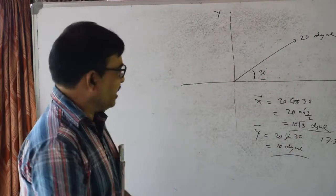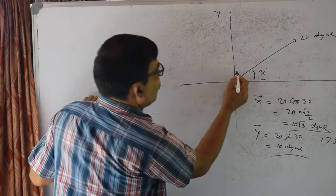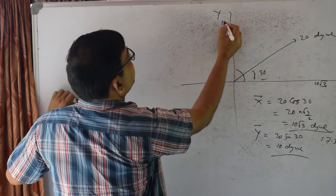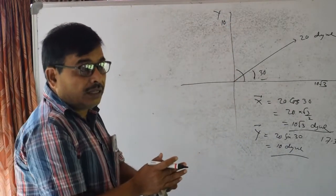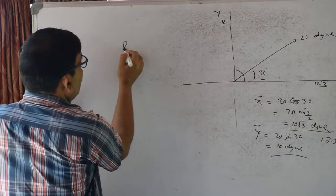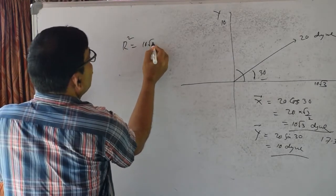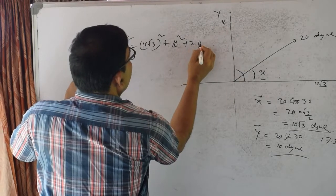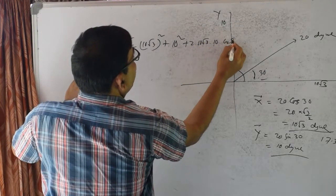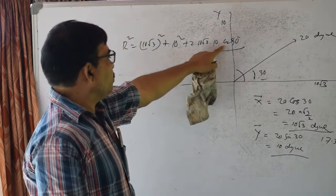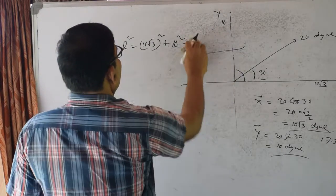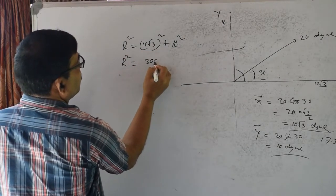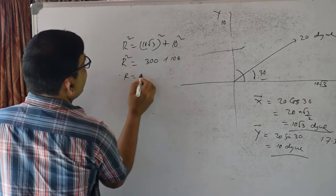I will show you the same thing. How is 90 degrees? This is 10 root 3; this is 10. What is 90 degrees? R squared equals (10 root 3) squared plus 10 squared plus 2 times 10 root 3 times 10 times cos 90. Cos 90 is 0. So R squared equals 100 times 3 plus 100, giving R squared equals 400, and R equals 20.